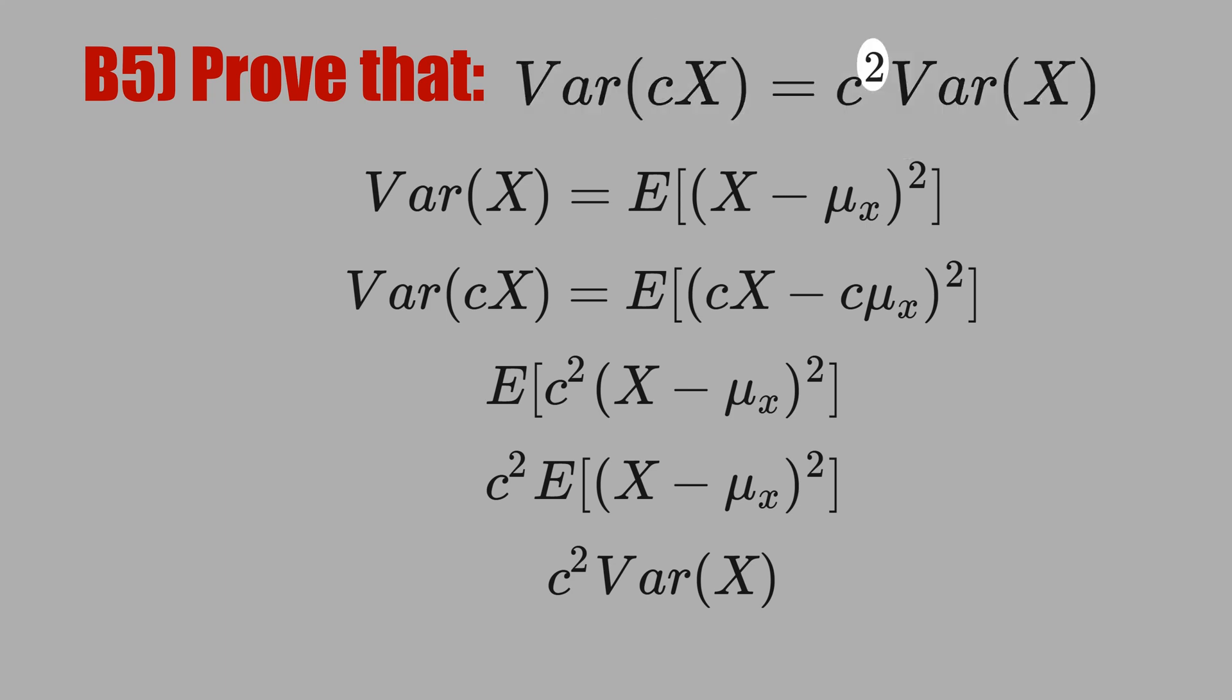The common mistake is to forget the square, because people think that the variance works the same as the expectation. See that when the constant goes outside of the expectation, you do not square. You just copy the constant.